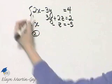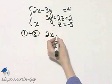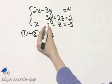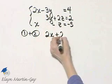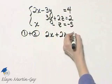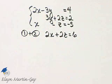Two x plus basically zero is two x. Negative three y plus three y, that term subtracts out, and then plus two z is equal to four plus two or six. So that's equation one plus equation two.